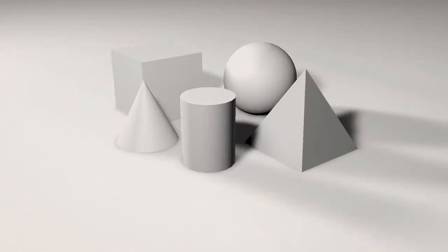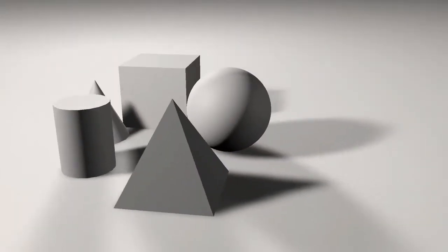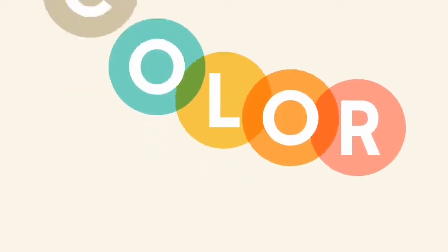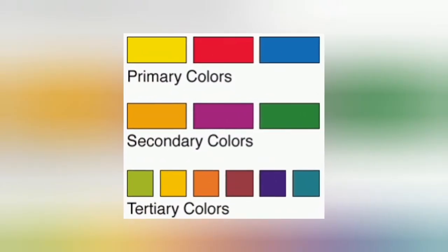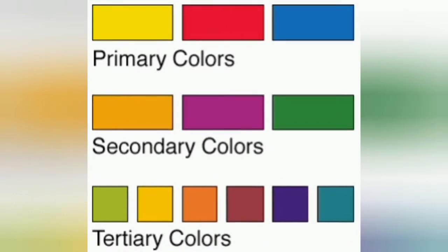These forms are often assembled together into what is called a still life, which allows artists to study light and shadow in a space. Another element of design is color, which plays a vital role in design. Colors are classified into three main groups: primary color, secondary color, and tertiary color.